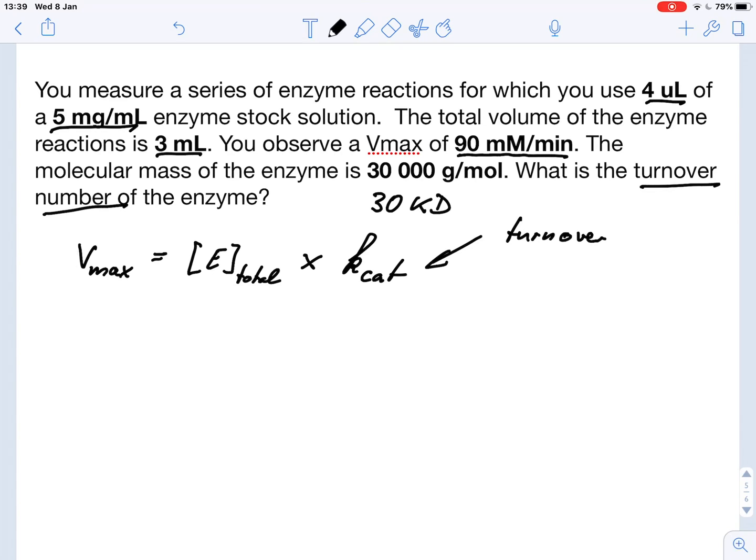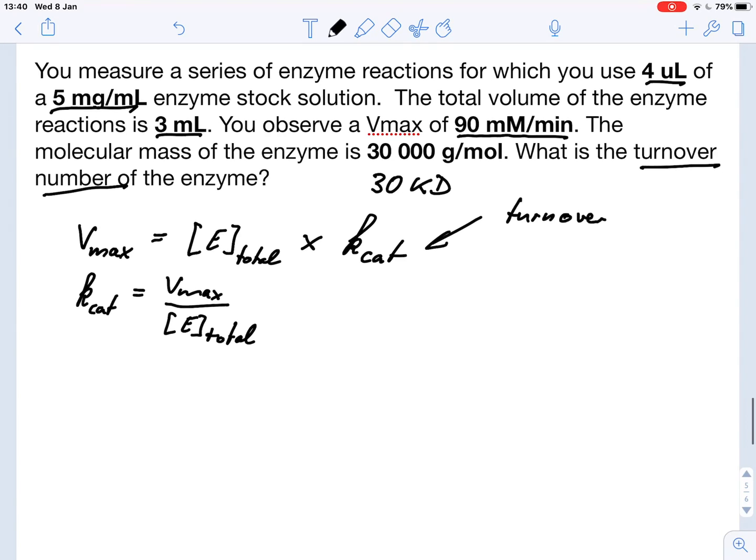So all we really need to do is we can easily rearrange this equation and get Kcat. So Kcat turnover number is Vmax divided by the enzyme concentration. And we already have Vmax, so we just need to calculate our total enzyme concentration.